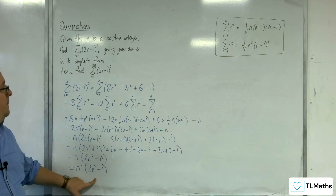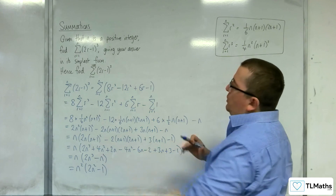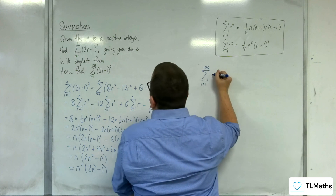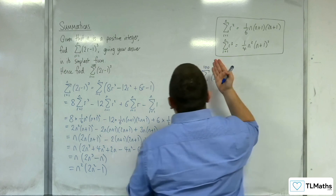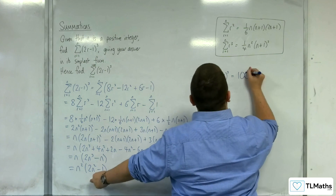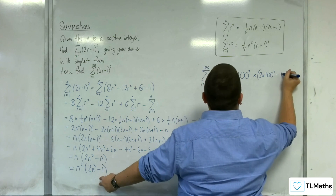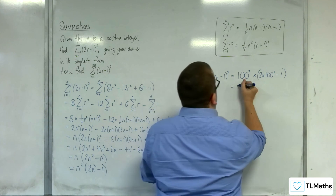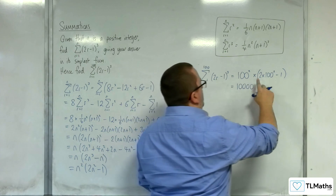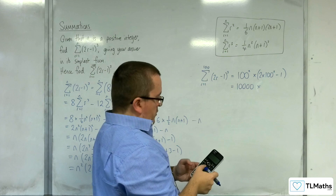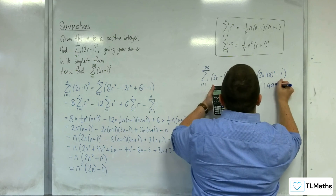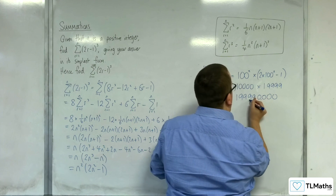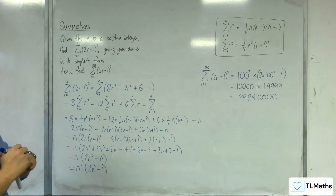So the answer in simplified form is n²(2n² minus 1). For the second part, find the summation from r equals 1 to 100 of (2r minus 1) cubed. We replace n with 100: 100² times (2 times 100² minus 1) equals 10,000 times 19,999, which gives 199,990,000.